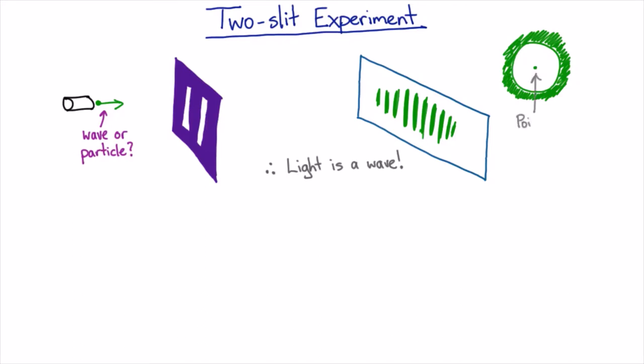Now, people originally took Poisson's suggestion as a disproof of the wave theory of light, because no one had ever seen bright spots in the middle of shadows before.